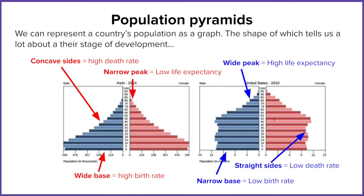Looking at birth rate and death rate together, we use population pyramids in geography. They represent the structure of a population as a graph. Looking at Haiti, it has a lot of bars sticking out at the bottom, representing age groups. Haiti has a large number of children between the ages of zero and fifteen, but the bars curve inward quickly after about the age of twenty.